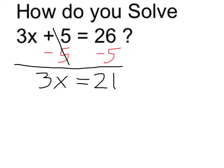On the left-hand side, the plus 5 and minus 5 cancel. The right-hand side, 26 minus 5 is equal to 21.